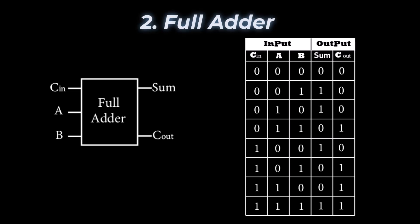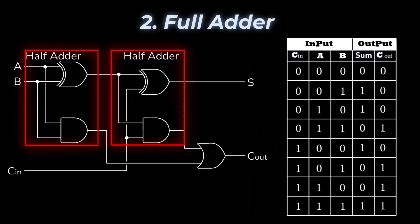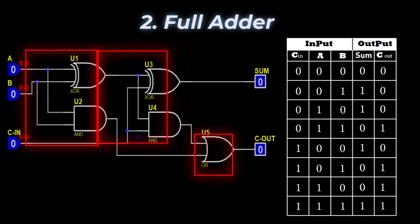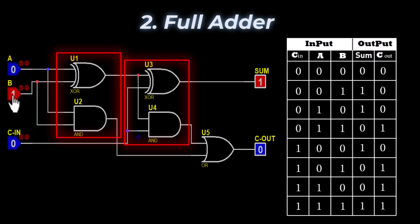The carry bit is fetched from the previous stage. The sum output is the result of adding the three input bits. The carry out is one if the sum of the three input bits is greater than one. A full adder can be constructed using two half adders and an OR gate — the two half adders add the input bits, and the OR gate combines their carry outputs.